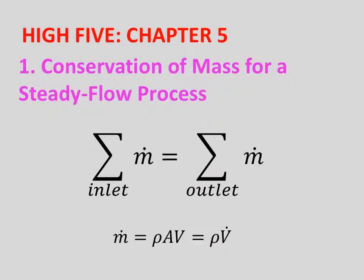In Chapter 5, the conservation of mass for a steady flow process means that the total mass flow rate of the inlet is always going to be equal to the mass flow rate of the outlet. M dot equals density times area times velocity.